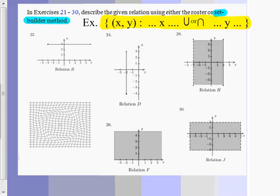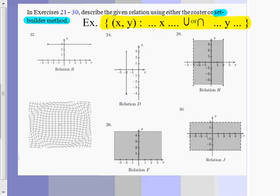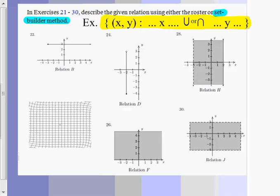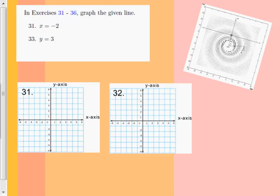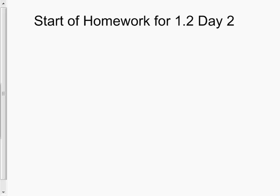On these last ones, you have to actually write the equation. It's like they give you the answer and you've got to write what the question is — kind of like Jeopardy. So if they've given you the graph, you figure out the equation. These last two are incredibly easy — they're just making sure you remember how to graph x equals negative 2 and y equals whatever. If you keep going past that, you'd be starting tomorrow's homework — it says 'start of homework for 1.2, day 2.'